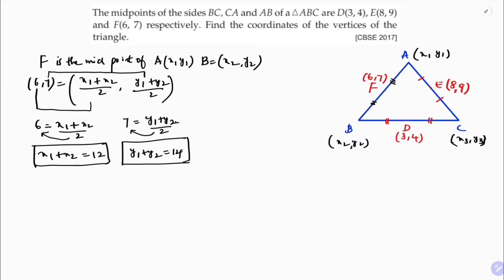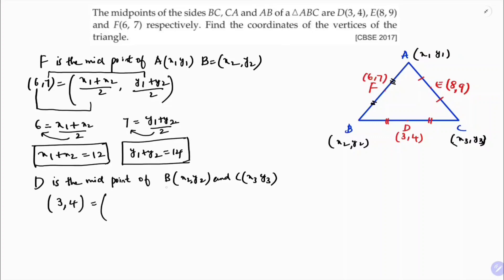Next, D is the midpoint of B(x2, y2) and C(x3, y3). The D value is (3, 4). Using the midpoint formula, 3 equals x2 plus x3 by 2, and 4 equals y2 plus y3 by 2.